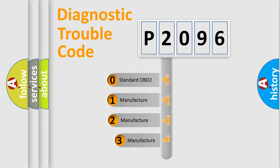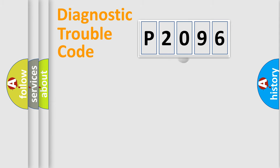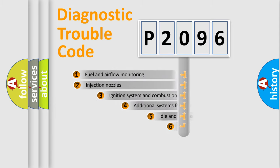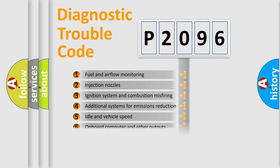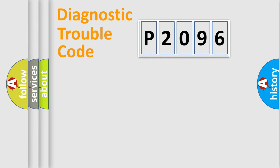If the second character is expressed as zero, it is a standardized error. In the case of numbers 1, 2, or 3, it is a manufacturer-specific expression of the car-specific error. The third character specifies a subset of errors. The distribution shown is valid only for the standardized DTC code.